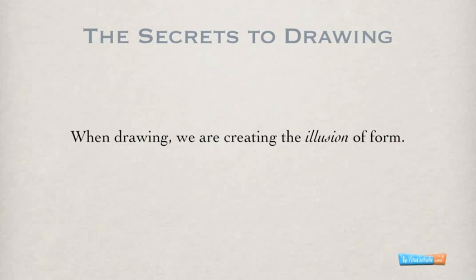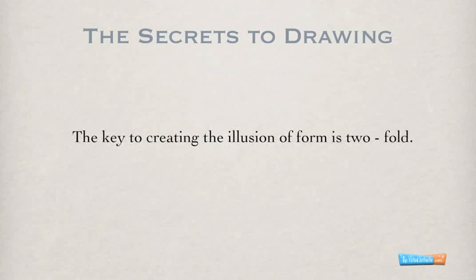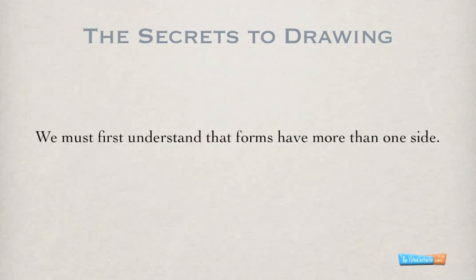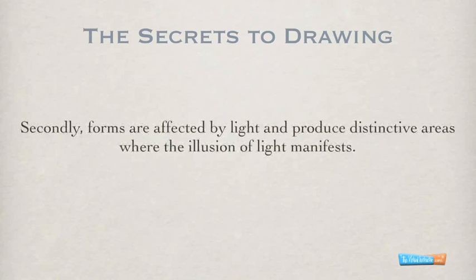So how can we create this illusion of form on a two-dimensional surface? The key is actually twofold — there are two things we need to keep in mind. First, we must understand that forms have more than one side. Unlike shape, forms have length, width, and height, and we need to include that in our drawings. Secondly, we need to understand that forms are affected by light and produce distinctive areas where this illusion of light manifests.